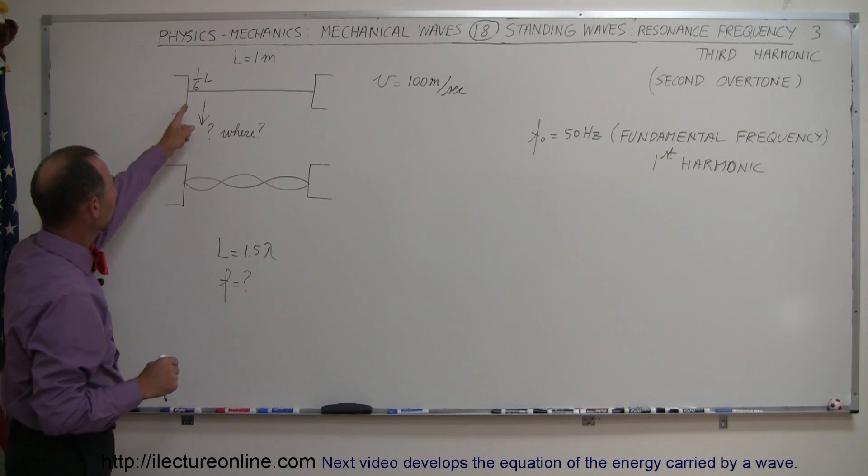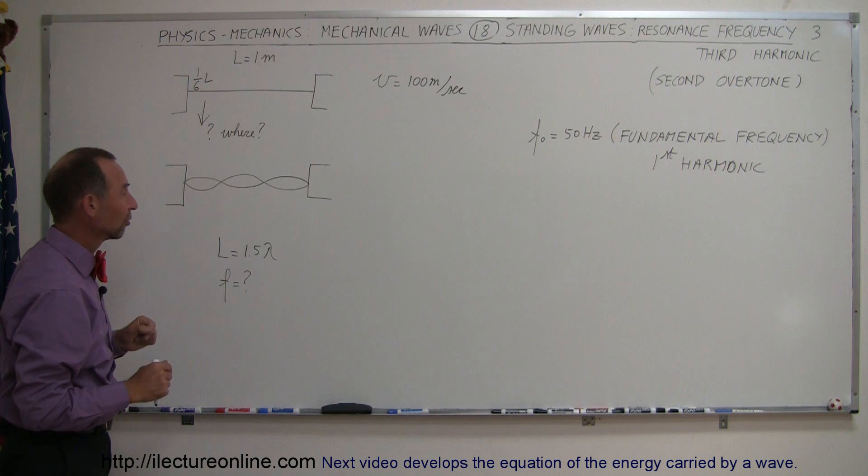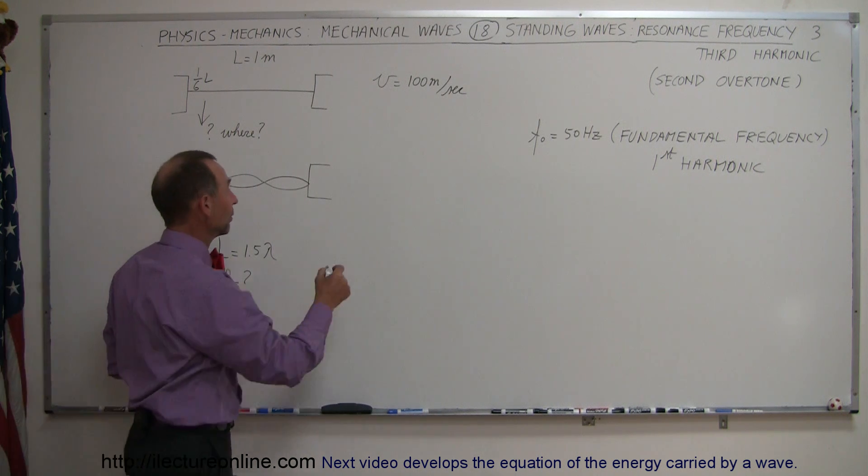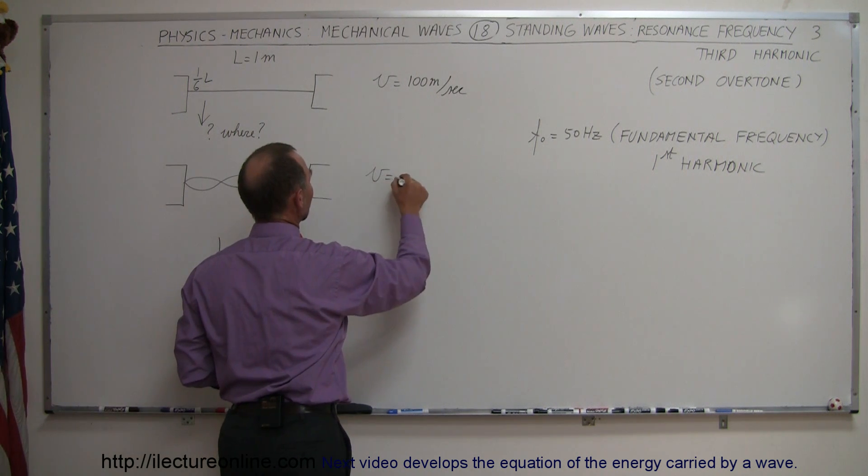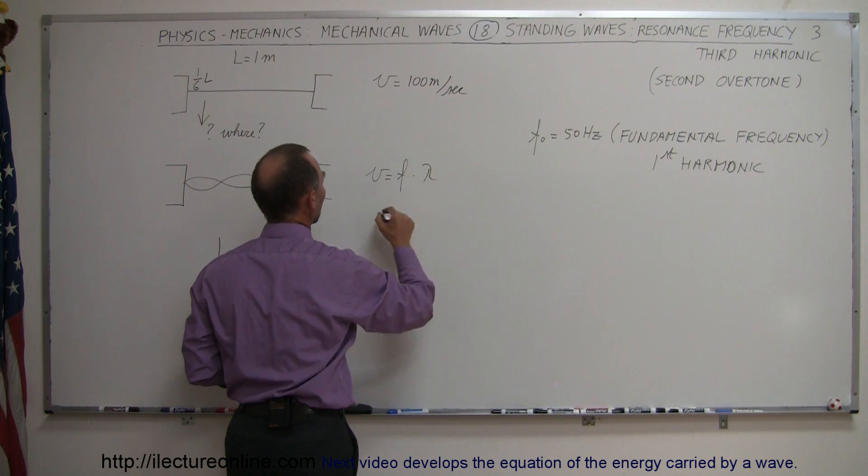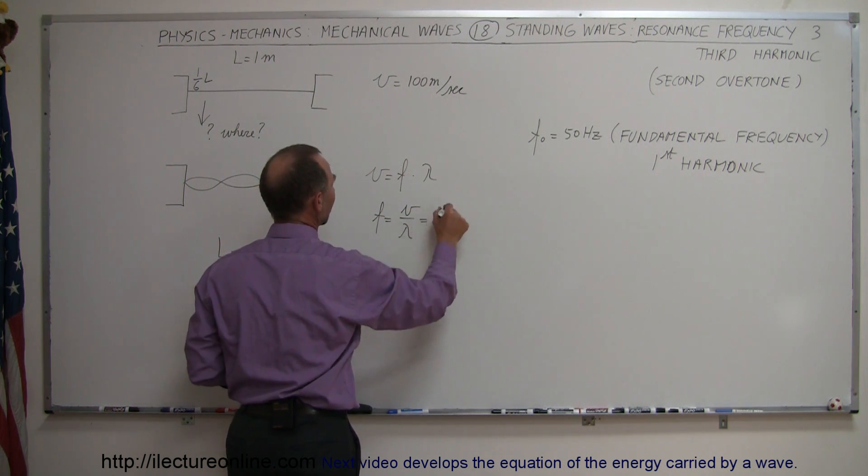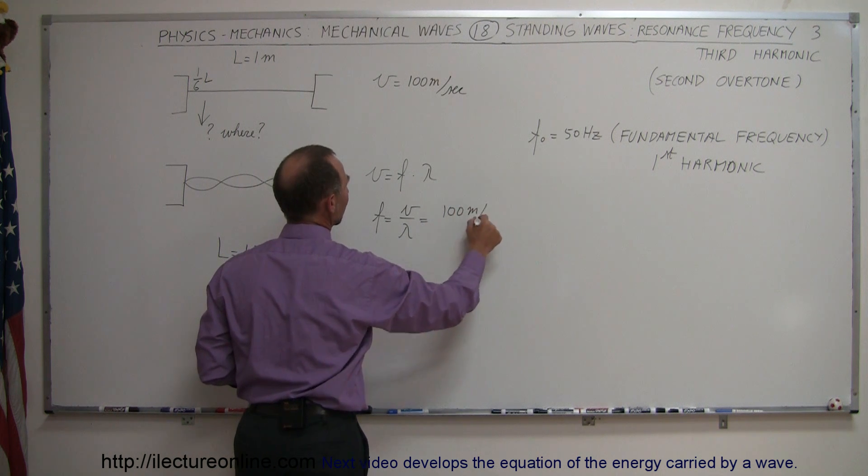So if you pluck it one-sixth the length of the string, you'll end up with a pattern like this. So what is the frequency? Well, again, velocity is equal to frequency times wavelength, which means that the frequency is equal to the velocity divided by the wavelength, and of course the velocity stays the same at 100 meters per second.